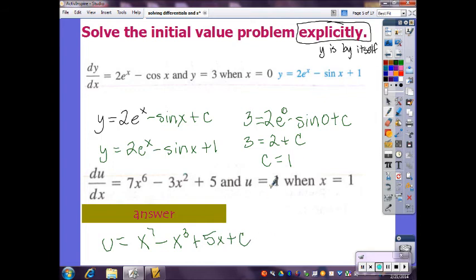And then plug in your u and your x values. So 1 equals 1 to the 7th minus 1 cubed plus 5 times 1 plus c. And then simplify. 1 to the 7th, 1 cubed, both are 1. And that would be 1 minus 1, which is 0. And then 5 times 1 is 5. So 1 equals 5 plus c. So c equals negative 4.